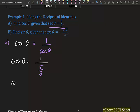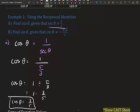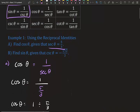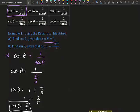We simplify using keep-change-flip: cosine θ equals one divided by 5/3, which is one times 3/5, so cosine θ equals 3/5. We noted that cosine and secant are reciprocals of each other — if we just flipped 5/3 we'd get 3/5 immediately. That's absolutely right, but we still need to know how to use the reciprocal identities because we'll use them inside equations.